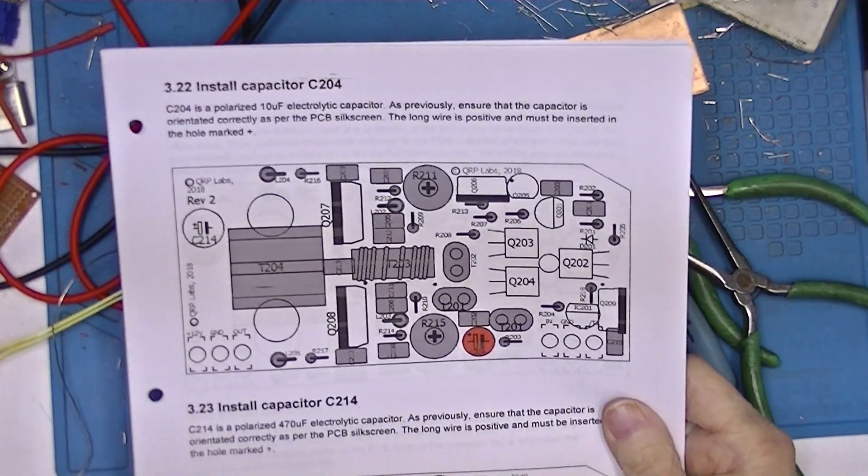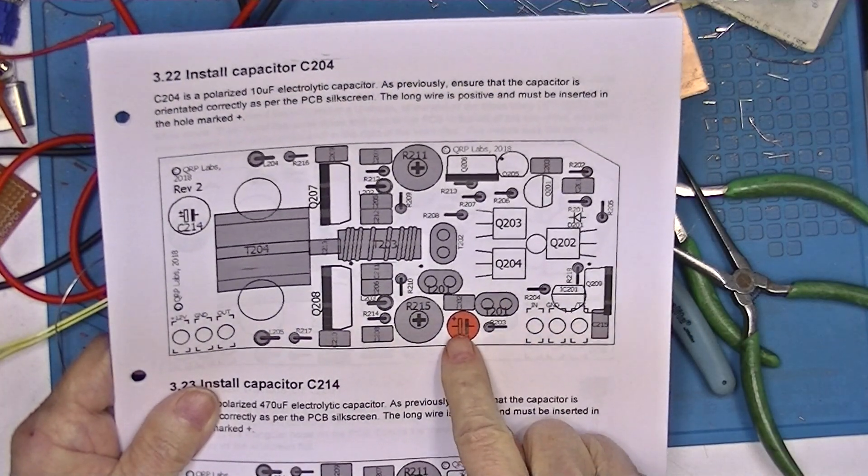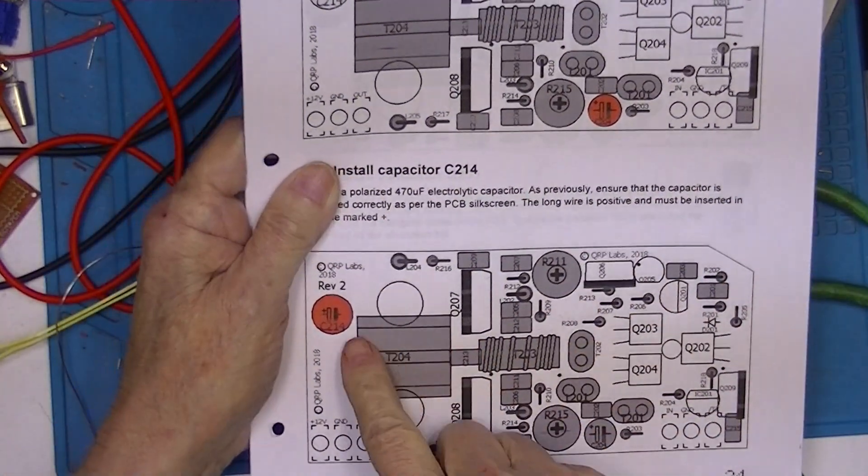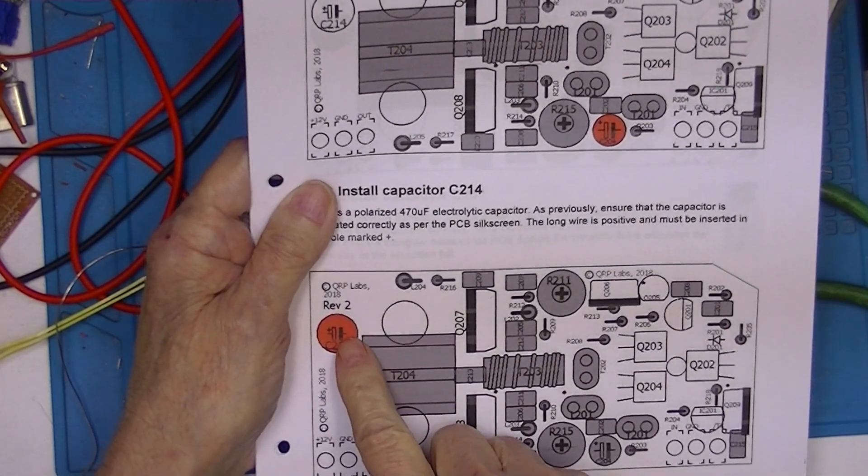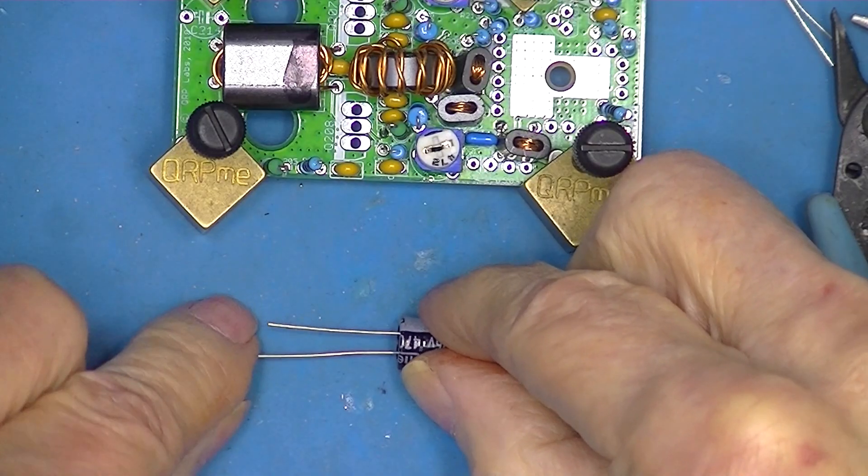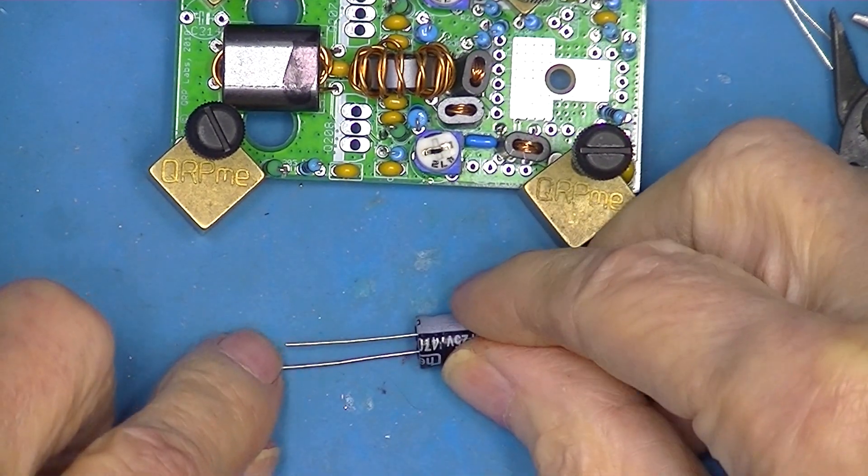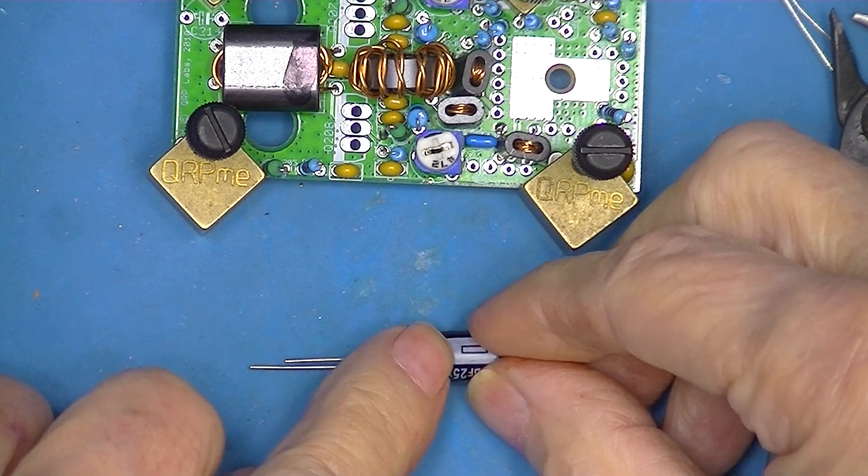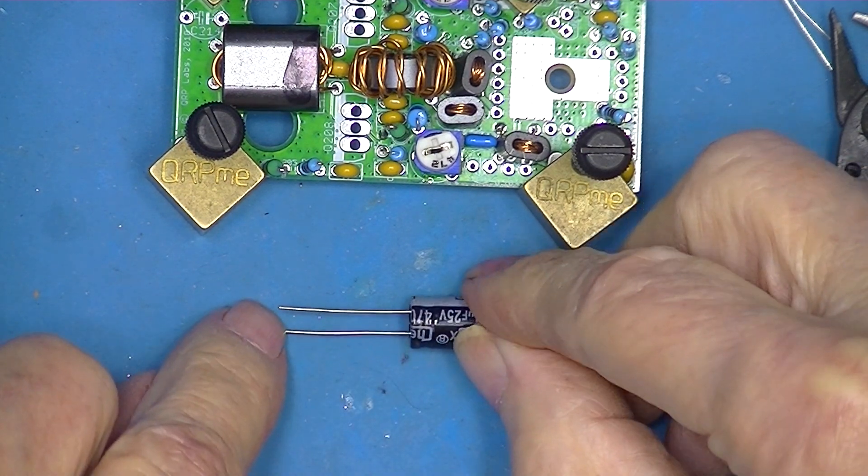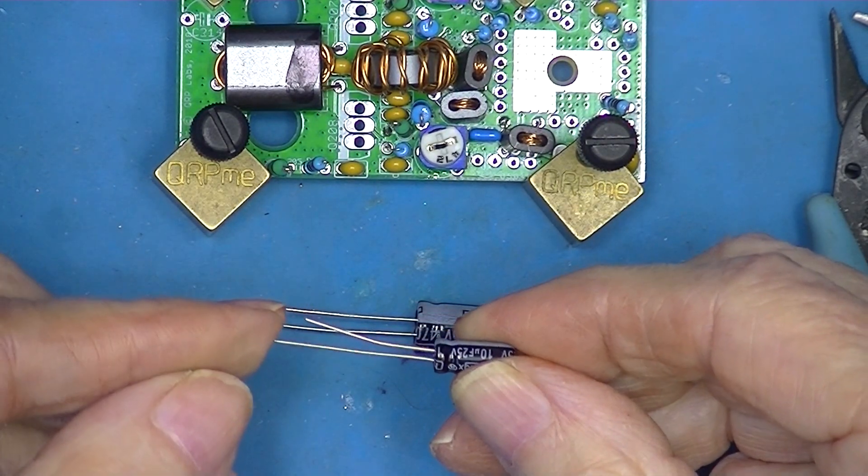We have a couple of electrolytic capacitors to install. These are polarized. The circuit board is marked with a plus. One of them is a 10 microfarad and one of them is a 470 microfarad. In each case, the positive lead goes this way. The 470 microfarad, the long lead is positive. The marked lead is negative. By marked, I mean this white band. And the 10 microfarad is just a smaller version of the same thing. Long lead positive.